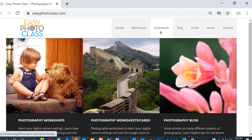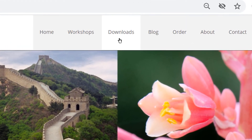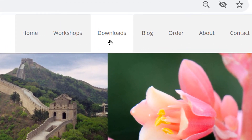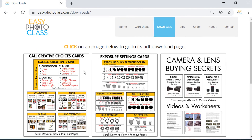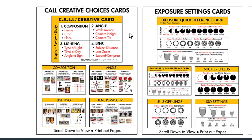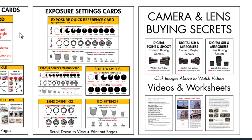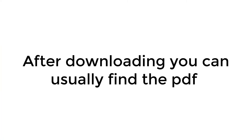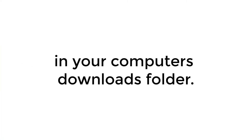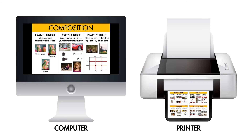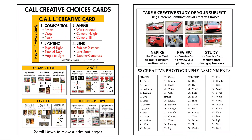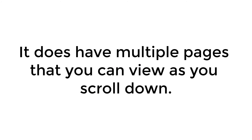To download the CALL Creative Choices quick reference cards, simply click on downloads in the menu at easyphotoclass.com. You can then click on the CALL Creative Choices download to get the PDF version of the cards. While you're there, you may also want to download the exposure settings and camera and lens buying downloads as well. After downloading, you can usually find the PDF in your computer's downloads folder. You can view the CALL Creative Cards PDF on your computer and print out the pages to study and carry with you in your camera bag. It does have multiple pages that you can view as you scroll down.